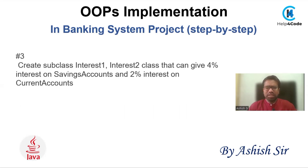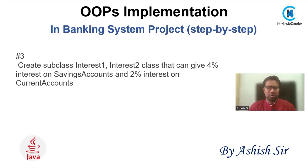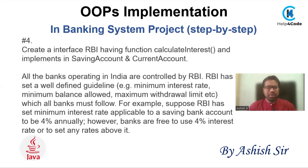In the third step, we are going to create two classes: Interest1 and Interest2. Interest1 will inherit the SavingAccount and Interest2 will inherit the CurrentAccount. We will calculate a four percent rate of interest on a saving account and a two percent rate of interest on a current account.